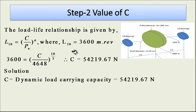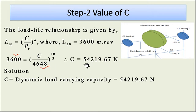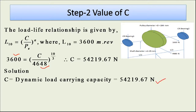Using a = 10/3 for the roller bearing and substituting L10 = 3600 million revolutions and P = 4648 N into the load-life relationship L10 = (C/P)^a, we get the dynamic load carrying capacity C = 54,219.67 N. This is the answer for this numerical. Thank you very much.